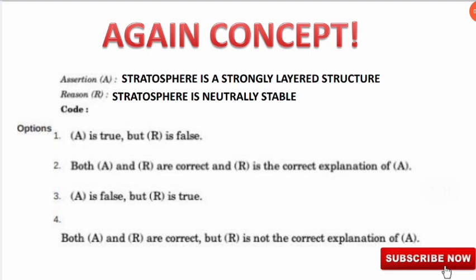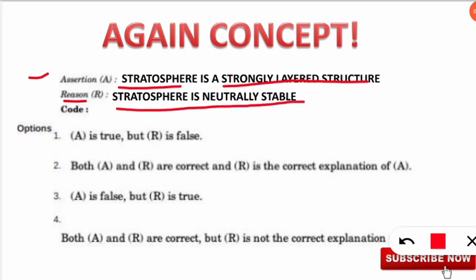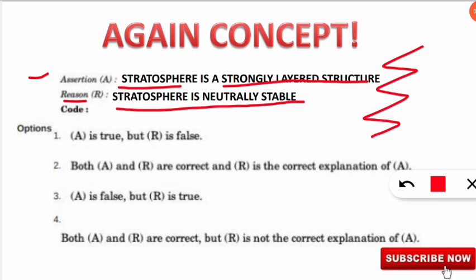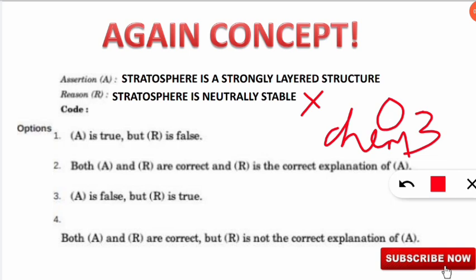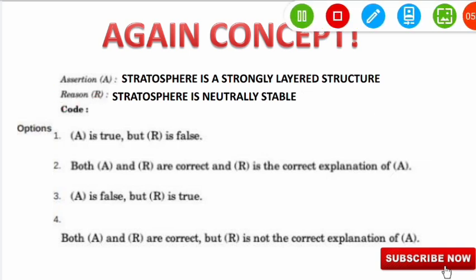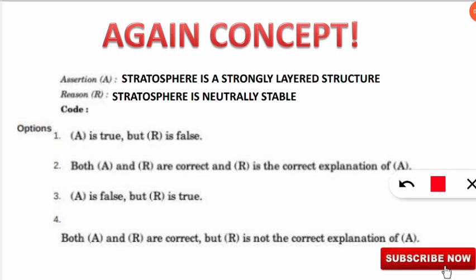From the June 2019 exam, a question was given about the stratosphere being neutrally stable. If our concepts about atmospheric layers, the stratosphere, and the ozone layer are clear, we know this is a wrong statement. Because the ozone layer is in the stratosphere, and the formation and breaking of ozone happens there constantly — so it is not neutrally stable. After reading the statement carefully, we determine that A is true but R is false — option three is the correct answer.